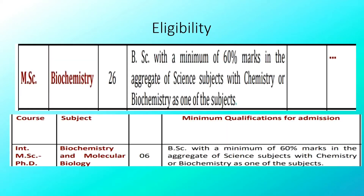Eligibility: everyone with a degree in Chemistry or Biochemistry is eligible, with a minimum of 60% marks in your degree. This applies for both MSc and the integrated MSc PhD program.